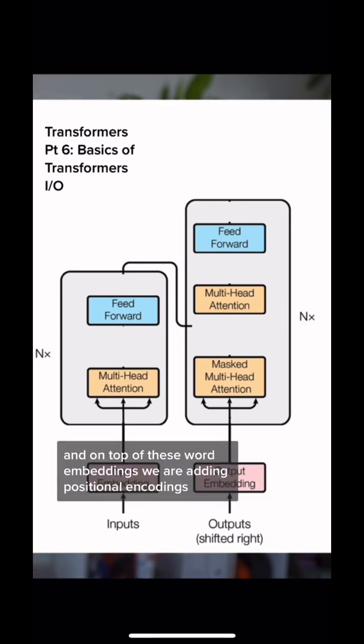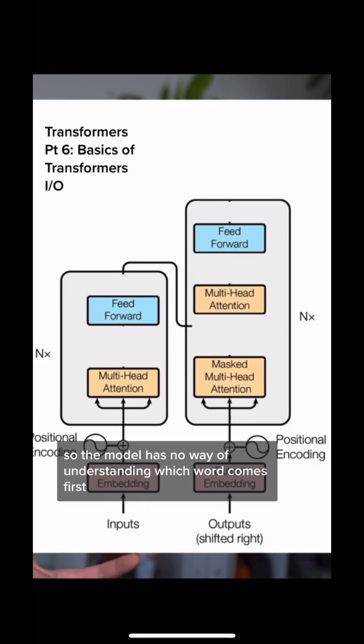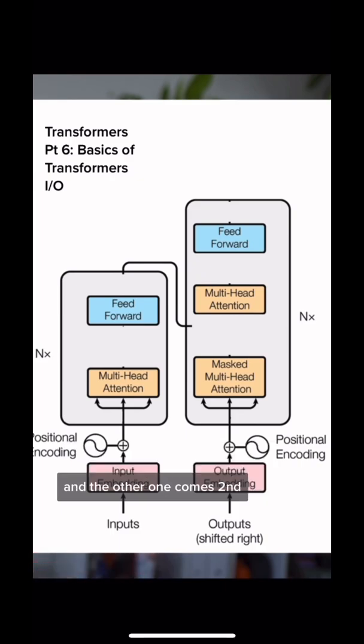On top of these word embeddings, we are adding positional encodings. Transformers do not have any recurrence, so the model has no way of understanding which word comes first or second, or where each word comes in the sentence.